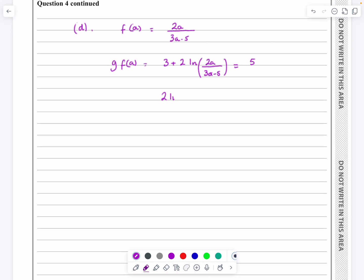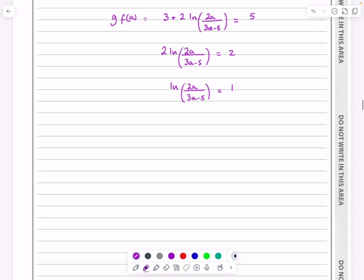Take the 3 over, so 2 log 2a over 3a minus 5 is going to be equal to 2. Divide those out, log 2a over 3a minus 5 is going to be equal to 1. e both sides to get rid of the log, so we're going to get 2a over 3a minus 5 is equal to e to the 1, which is e, obviously. And I'm just trying to rearrange this now to get a equals.